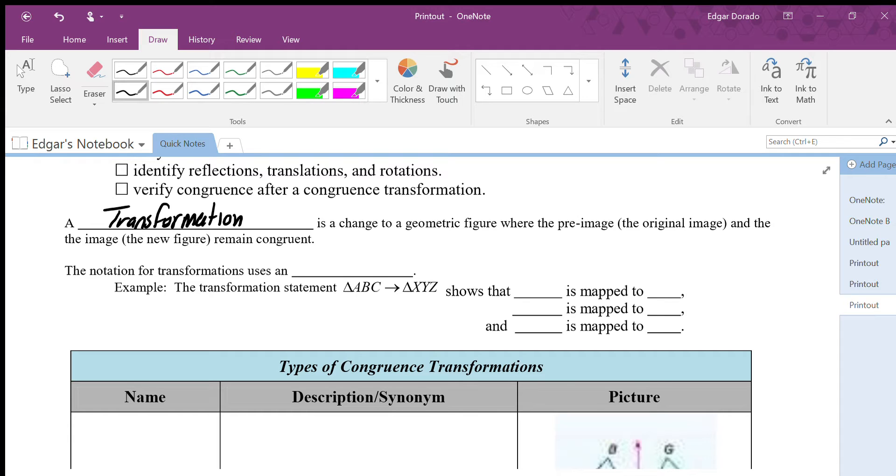Now, the notation for transformations that we use is an arrow, which can be shown right here. So this is saying that we are transforming something. So in this case, the transformation statement, triangle ABC is being transformed to triangle XYZ. So what does that do? Well that shows that A is being mapped to X, B is being mapped to Y, and finally C is being mapped to Z.